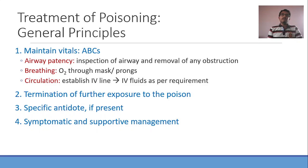The second principle is to terminate further exposure to the poison. Once this is done, you should focus your attention on administering any antidote if available — not all poisonings will have an antidote. If a specific antidote is available, you administer that as the third step. And finally, you provide symptomatic and supportive management. These are the four general principles for the treatment of poisoning.